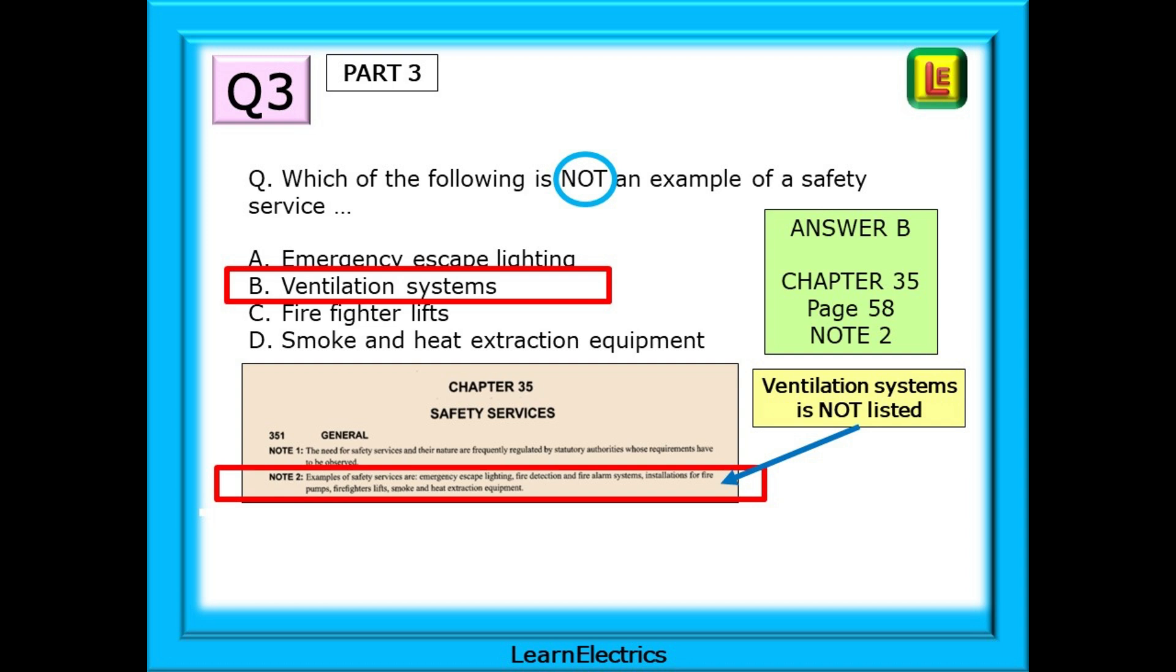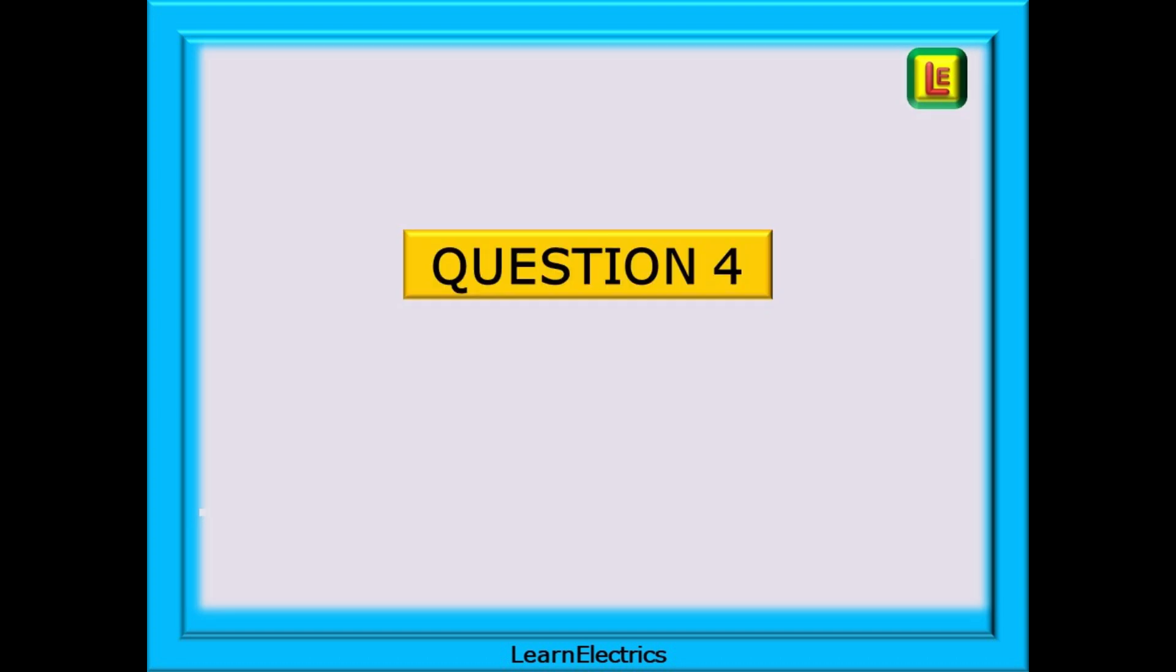On page 58 we will find chapter 35 and near the top of the page note 2. Look at this list of safety services and notice that ventilation systems is not listed. This is the one we need. Answer B.